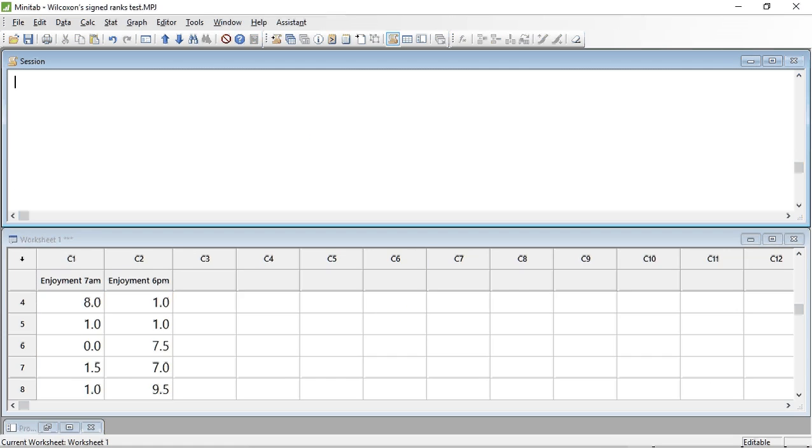The Wilcoxon sign rank test for matched pairs is not straightforward in Minitab because there is not a direct command for this test. However, we can do a one sample Wilcoxon sign rank test on the difference between our data pairs.